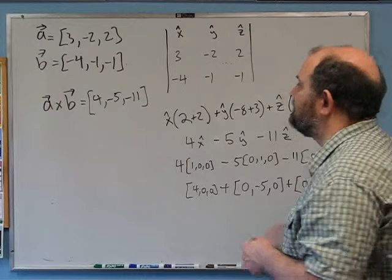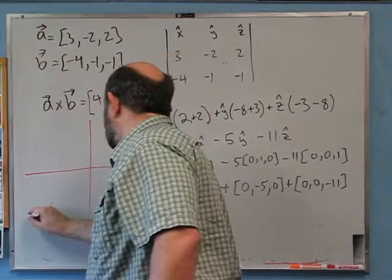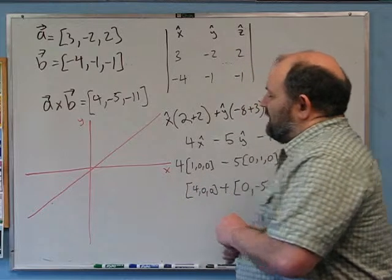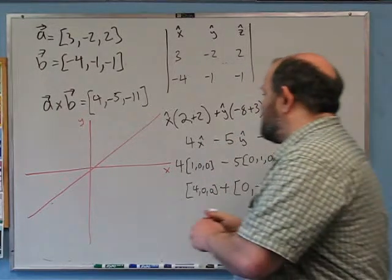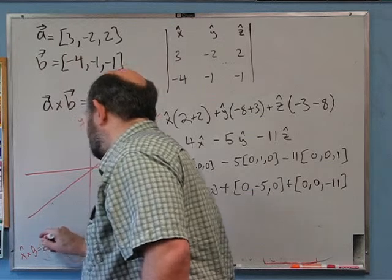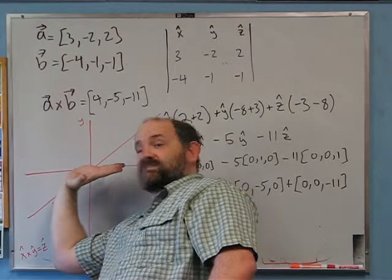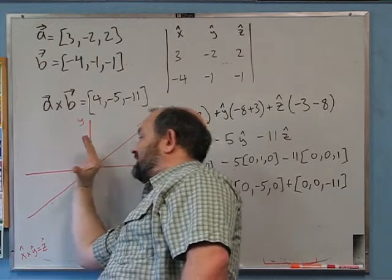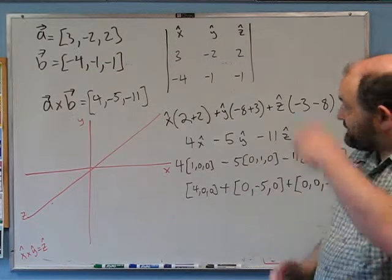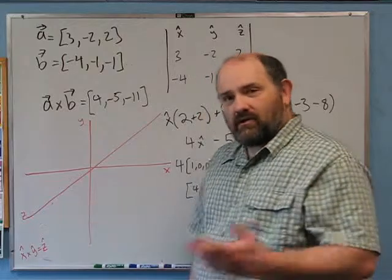There's one more thing — I want to try to draw this, though drawing in 3D is always a challenge on 2D surfaces. I'll define x this way and y this way. Z is out of the board, which you can verify: once you've chosen two axes, x-hat cross y-hat must equal z-hat. Using the right-hand rule, orient fingers along x, curl toward y, and the thumb points along z. Always make sure you have a right-handed coordinate system.